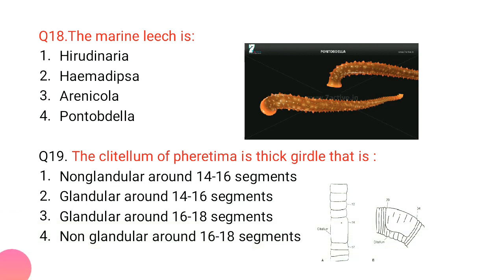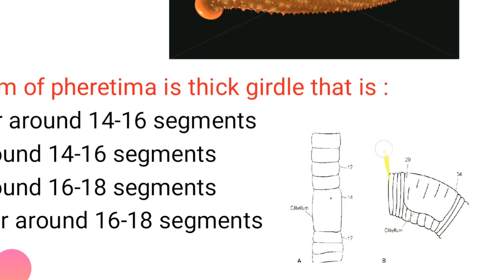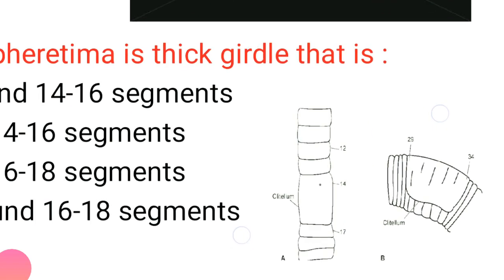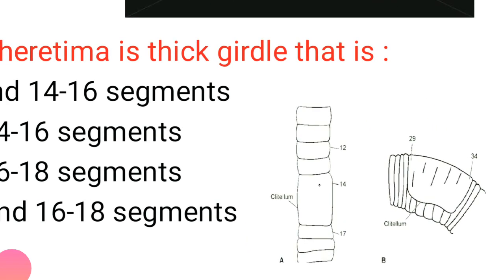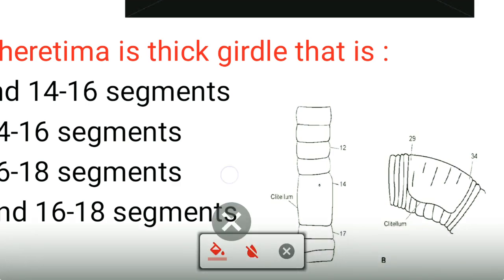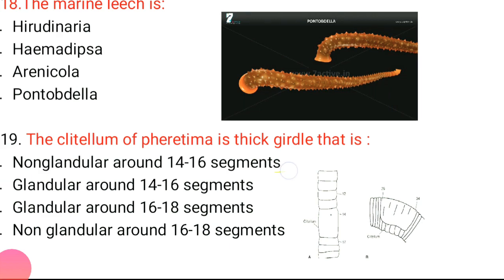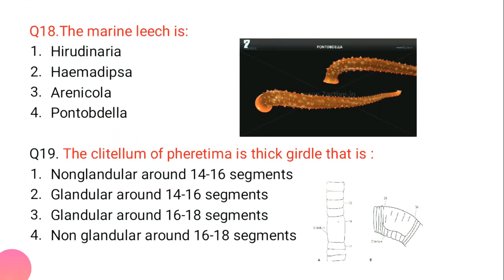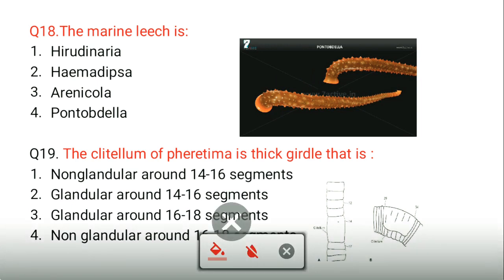The clitellum of Pheretima is a thick girdle present in segments 14 to 16. These segments are glandular in nature. So the clitellum of Pheretima — the earthworm — is glandular and present around segments 14 to 16.